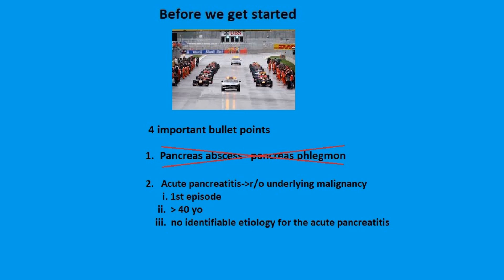Often, perhaps too often, we see reports mentioning 'enlarged, inflamed pancreas — can't rule out cancer.' Clearly, pancreatitis is far more common than pancreas cancer. So when should we suggest a CT to rule out underlying malignancy? Three things: if it's the first episode of pancreatitis, if the patient is over the age of 40, and if there's no identifiable reason for the pancreatitis.